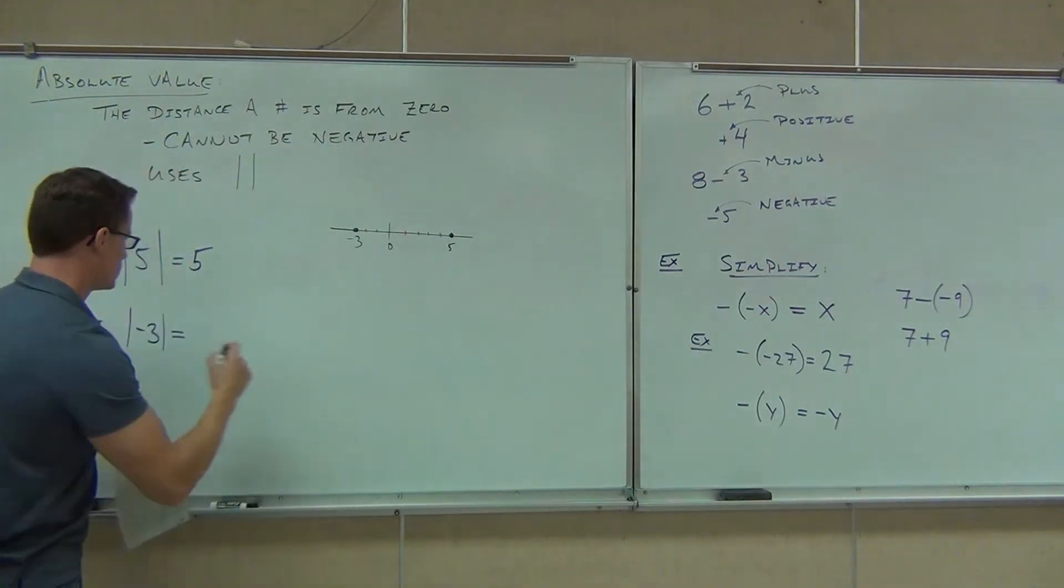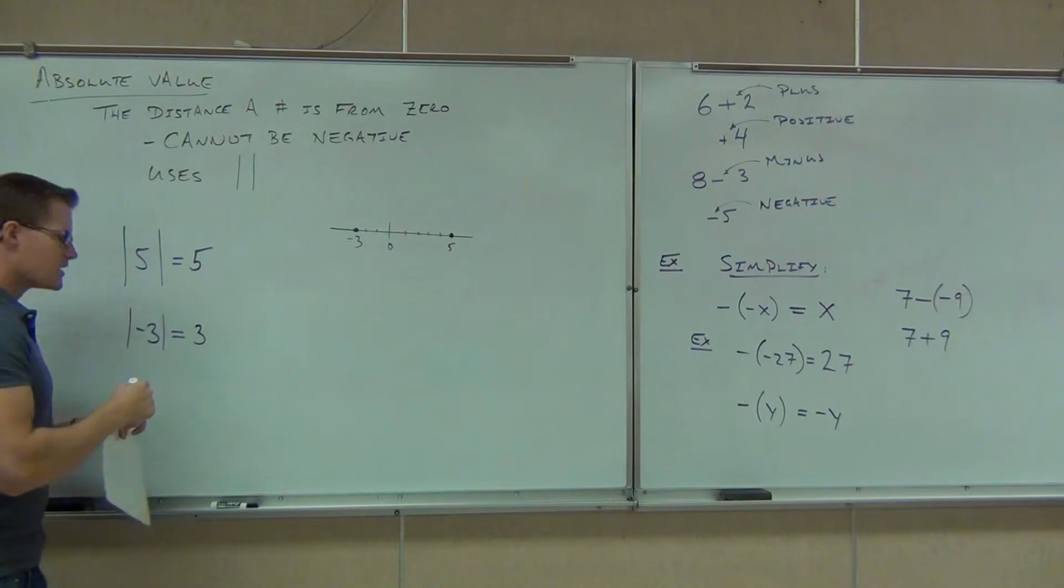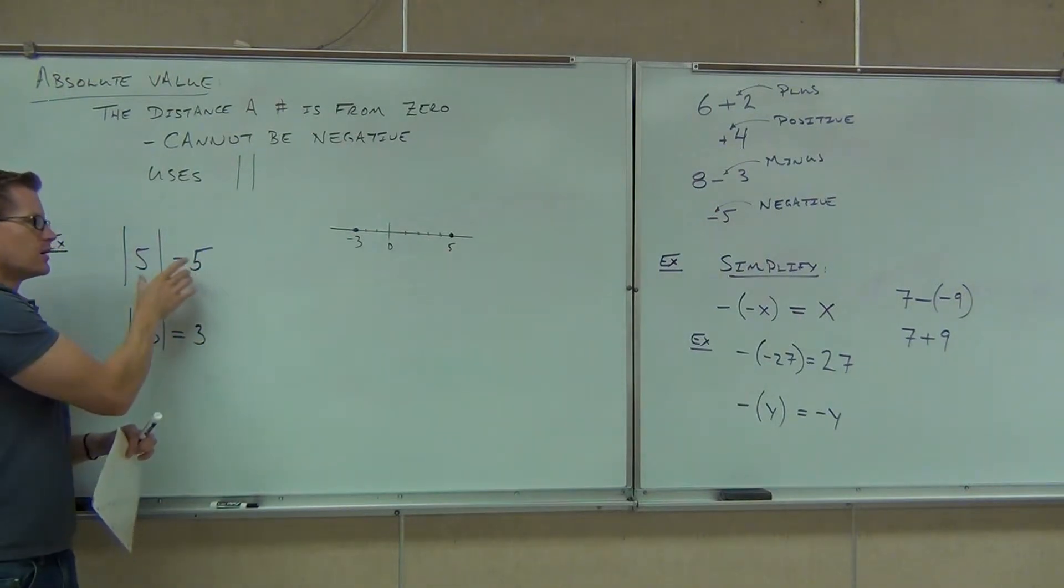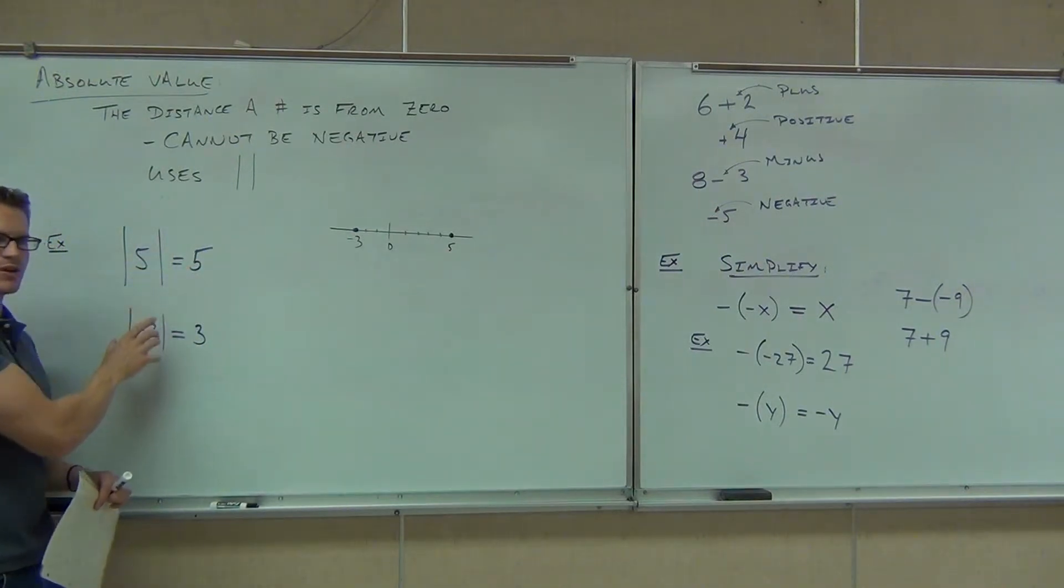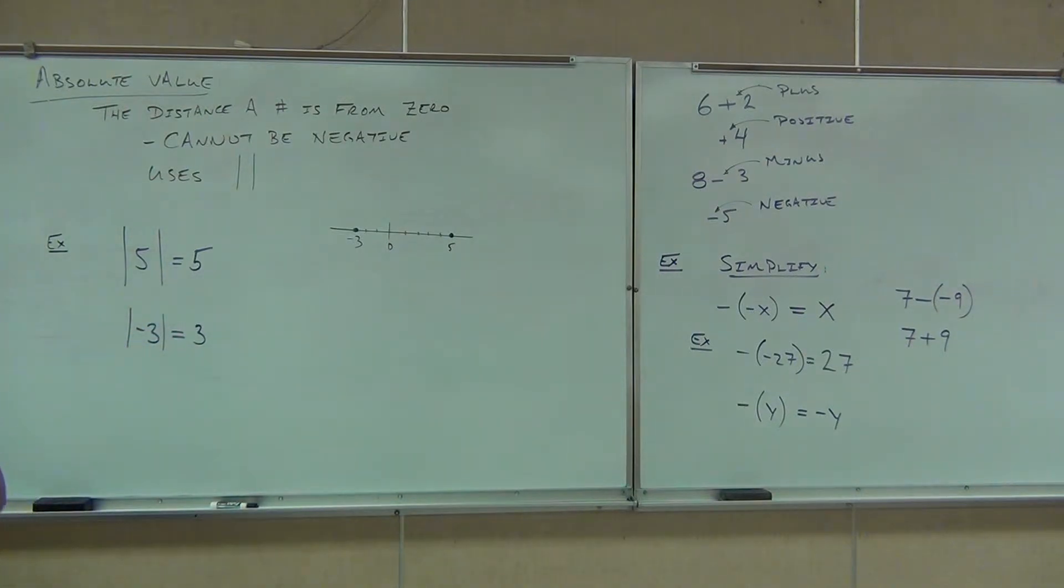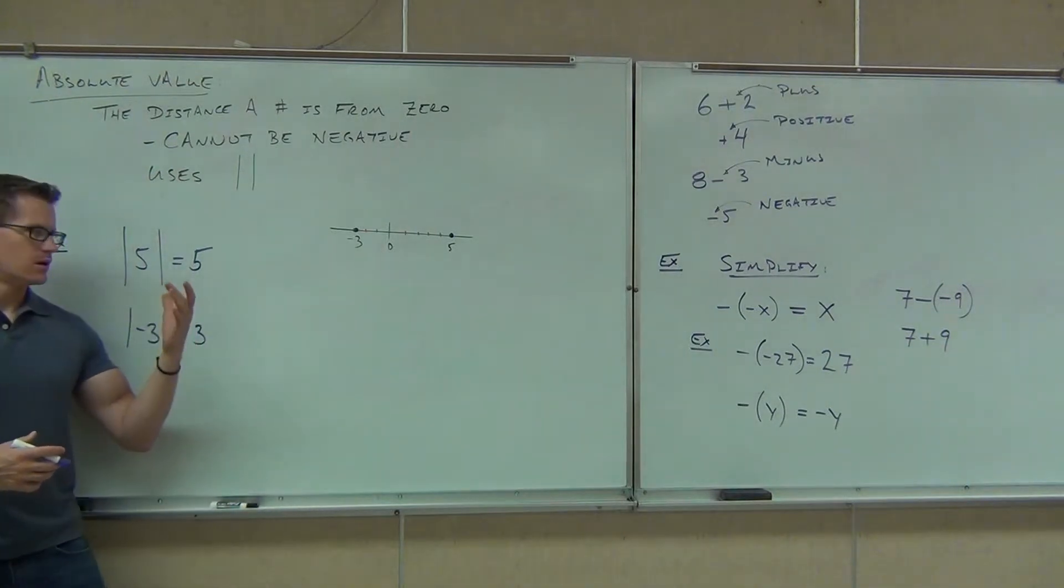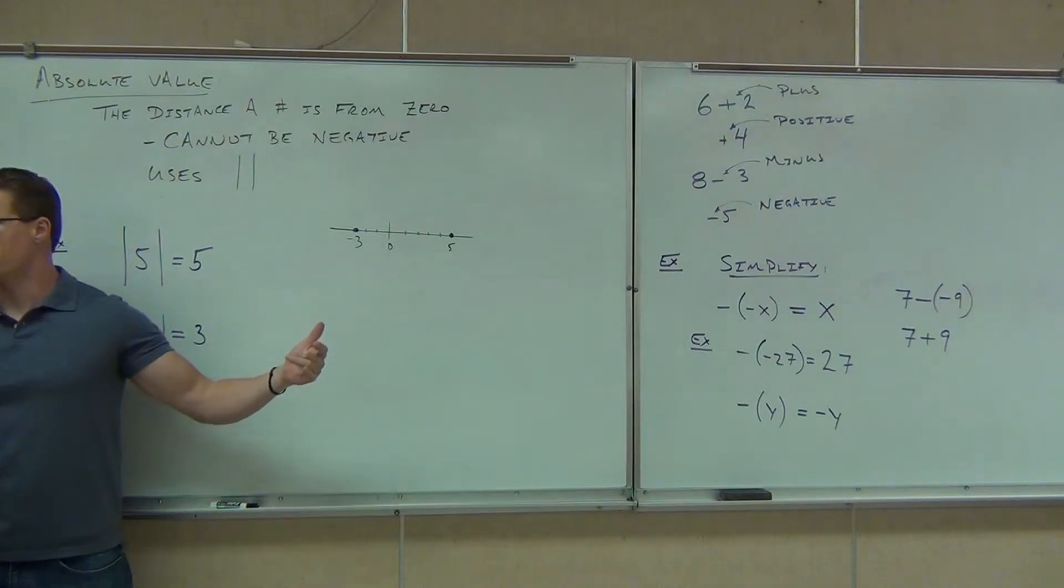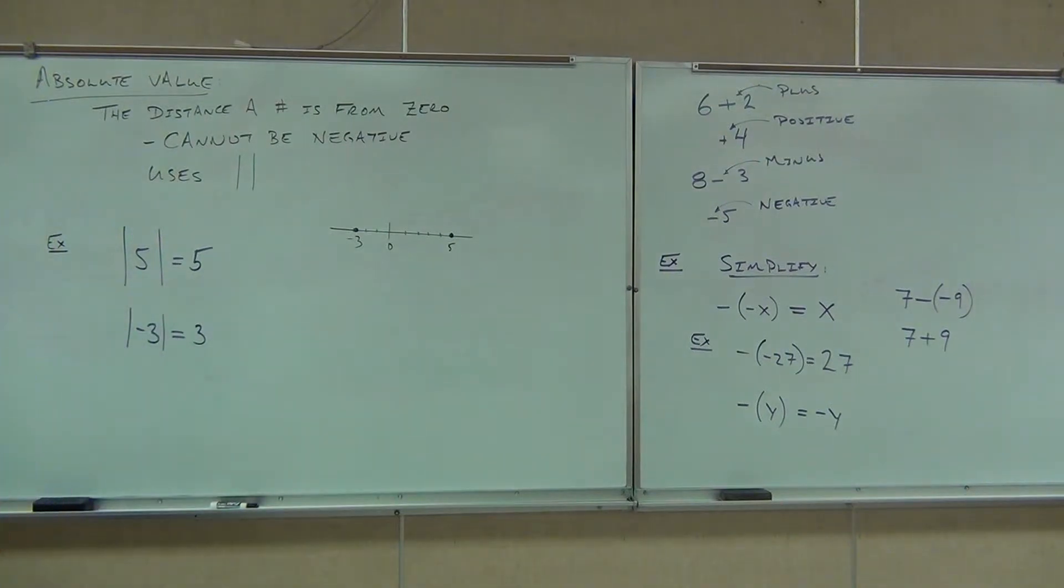Nod your head if you're okay with that. Good, all right. So absolute value is never going to give you a negative, even if the number inside your absolute value is a negative. It's just counting the spaces to zero. That's what it's doing. Basically, no matter what, the answer from the inside is going to be positive. That's basically the idea here. Let's try a few more examples.